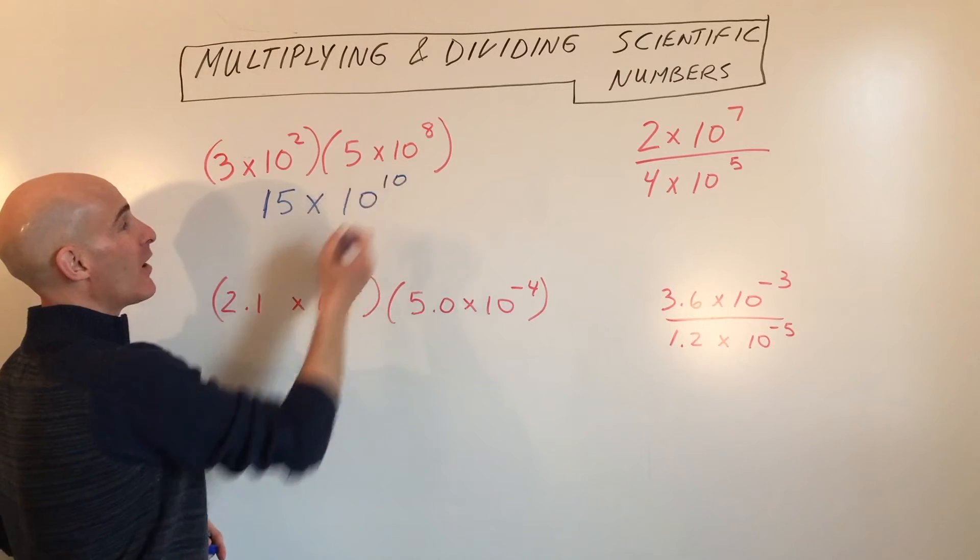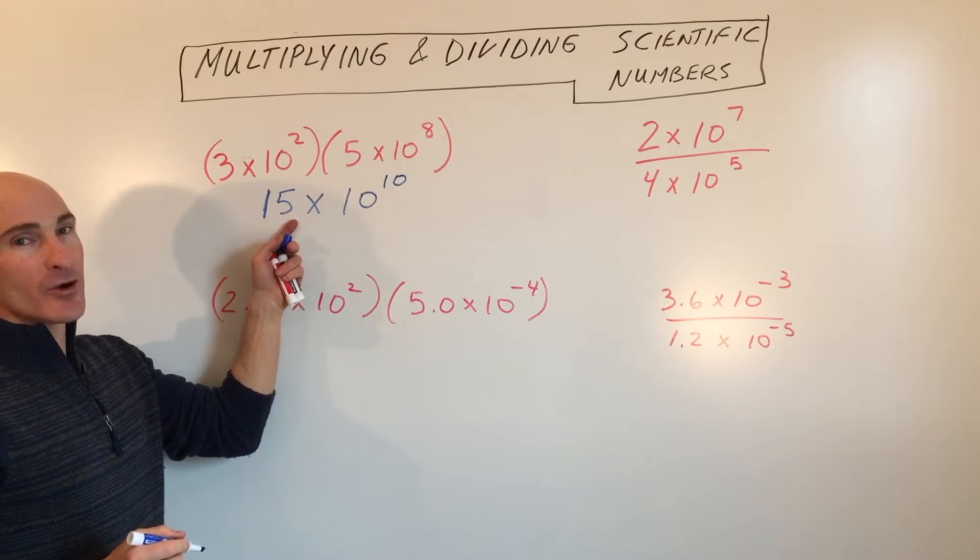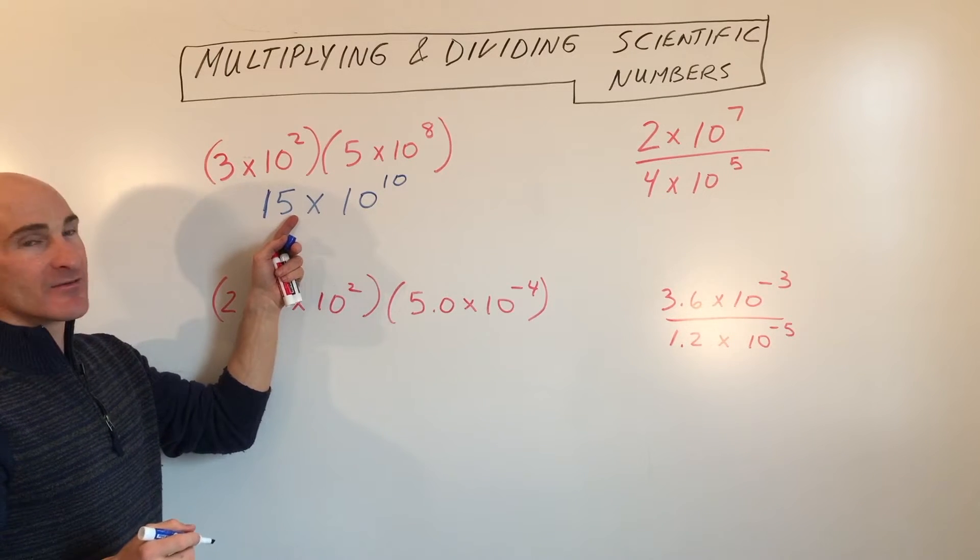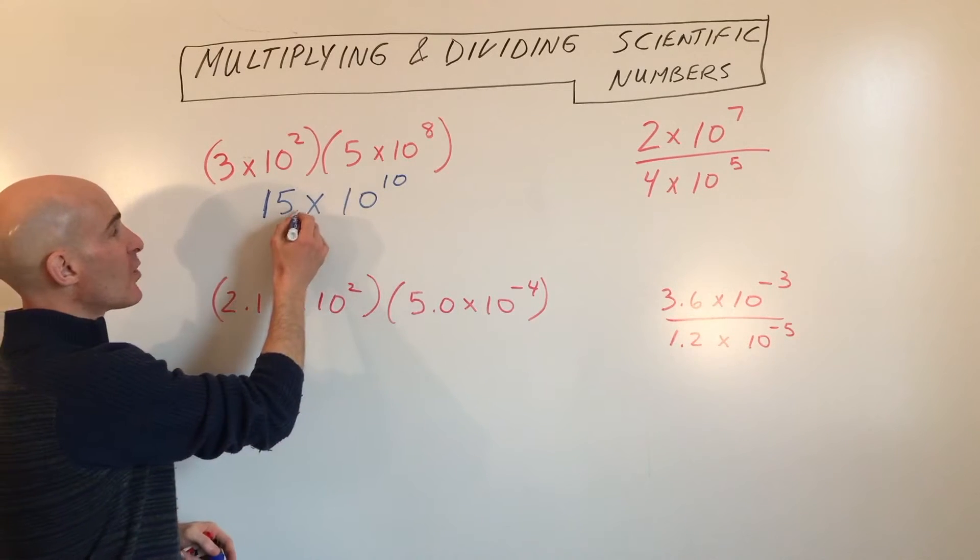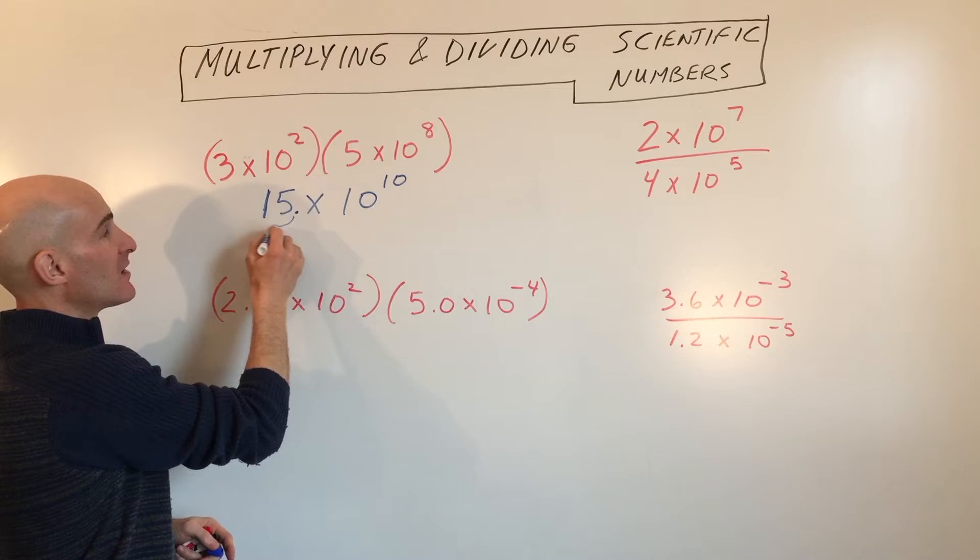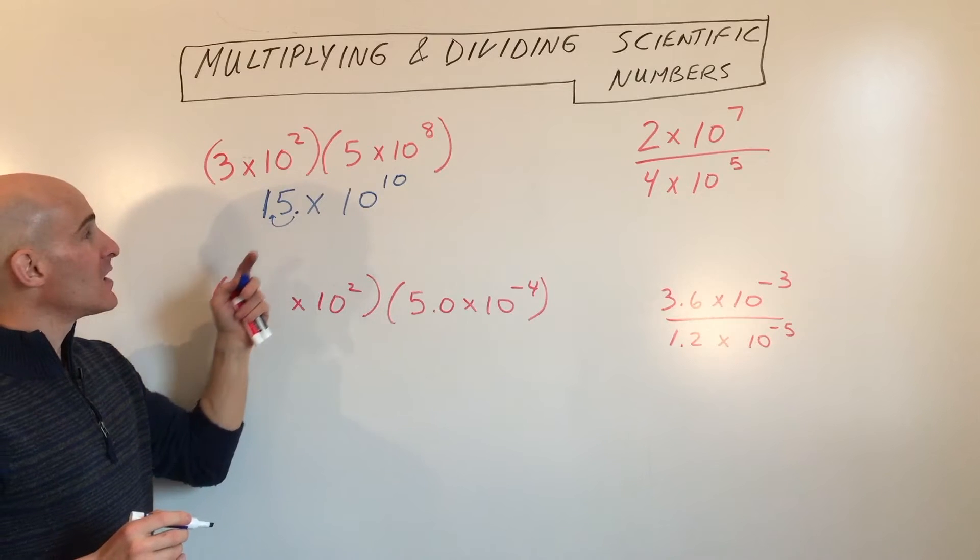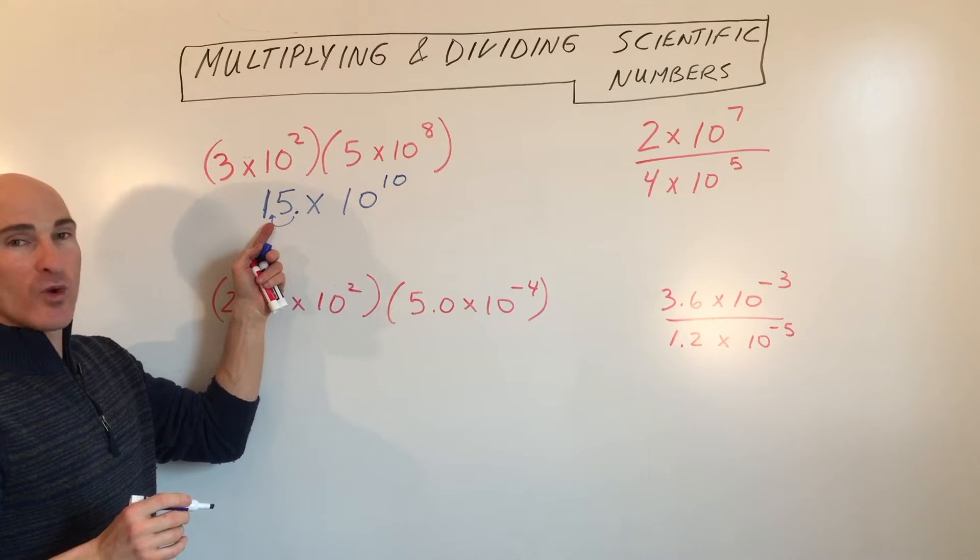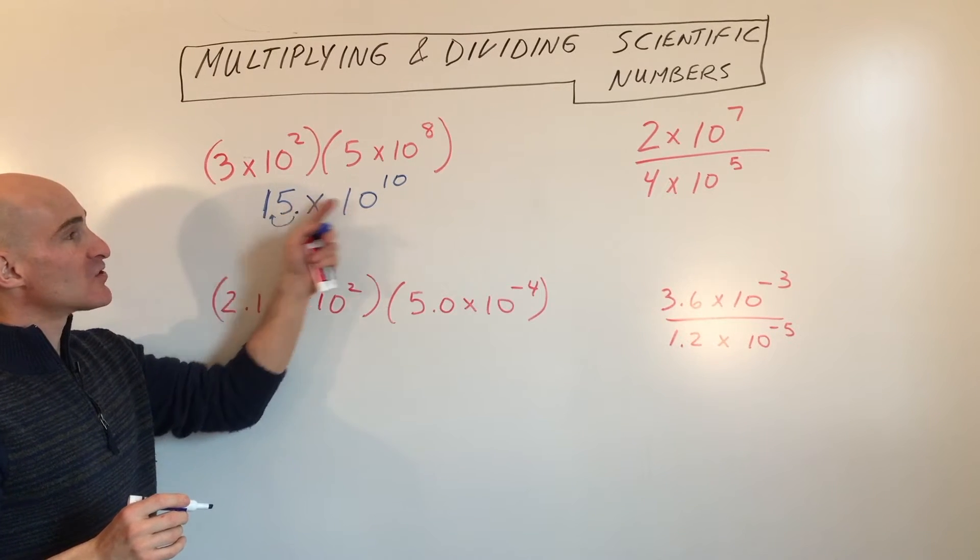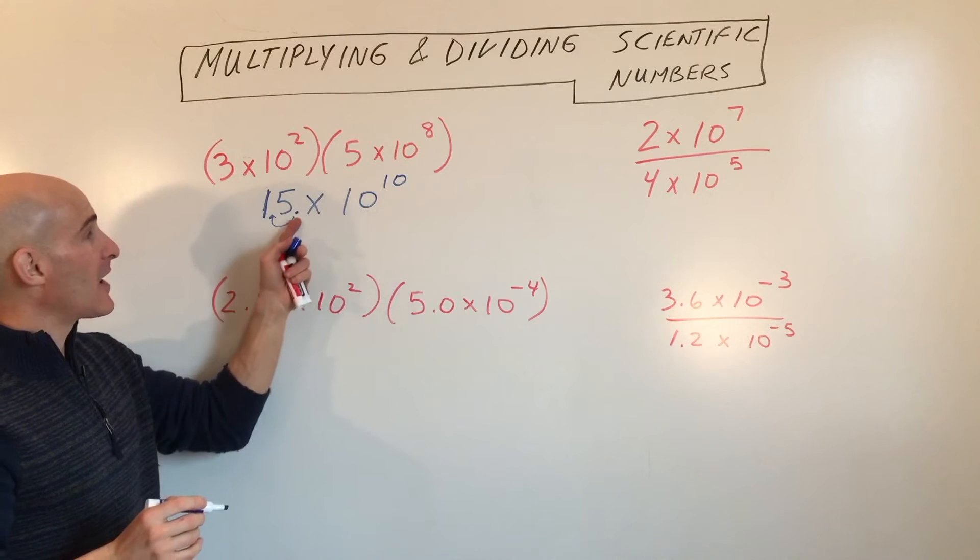So that's 10 to the 10th power. But when we look at this number, you can see it's not in scientific notation. We really want this decimal point to be right here, so that there's just one non-zero digit in front of the decimal point.